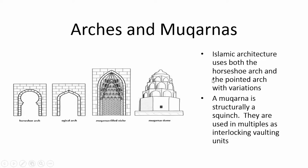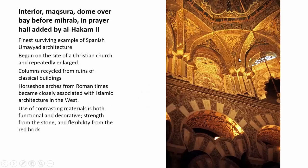Their architecture uses horseshoe arches — a modification of the Roman arch — and also what they call an ogival or pointed arch. Mukarnas are structurally squinches — interlocking vaulting units used in their architecture. You can see this horseshoe arch with columns next to it and how they're piled one onto the other.